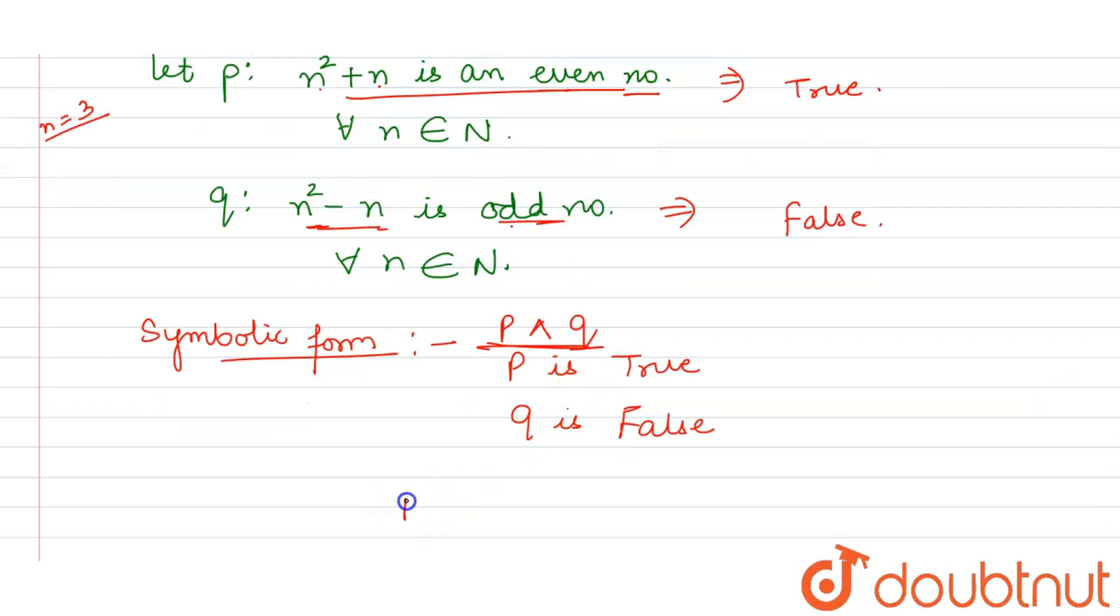Now, iski truth value kya hogi? P and Q ki? It will be, ek true hai, ek false hai. To, it will be false. To, iski truth value ho jaye? False.